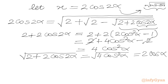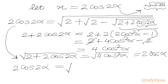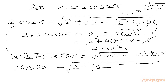So in place of square root of 2 plus 2 cos 2α we write 2 cos α. Our equation now becomes 2 cos 2α equal to square root of 2 plus 2 minus 2 cos α.